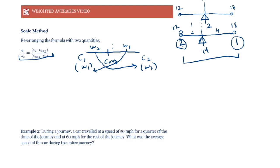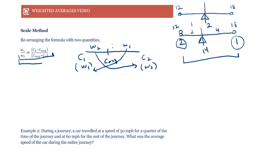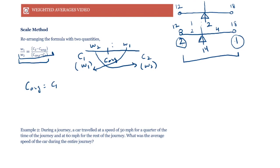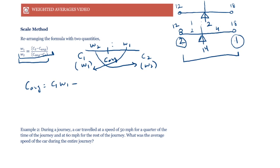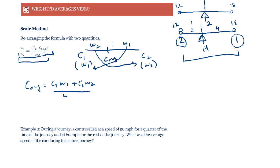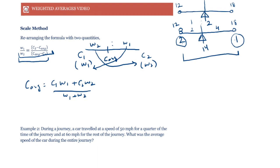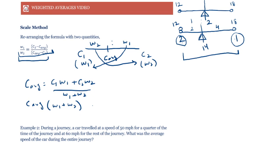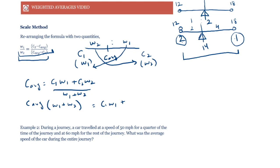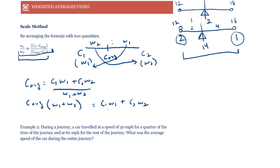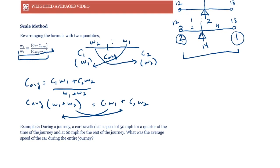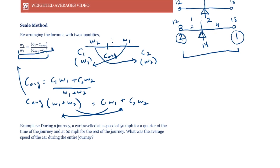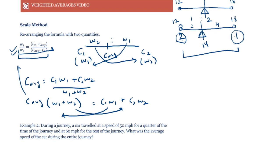We can also obtain the same formula by manipulating our regular weighted averages formula. c average equals c1·w1 plus c2·w2 upon w1 plus w2. When we cross multiply, we get c average times (w1 plus w2) equals c1·w1 plus c2·w2. Taking the w1s on this side and w2s on this side, we get the same formula.